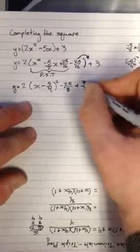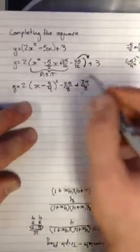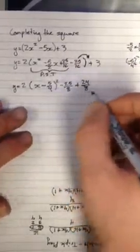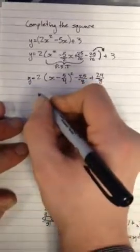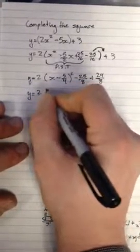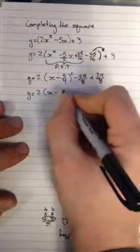And it'll be 24 over 8 is the fraction that would get me 3. That's kind of nice, it's gonna work out to something simple. So this is going to be y equals 2(x minus 5 over 4)² minus 1 over 8.